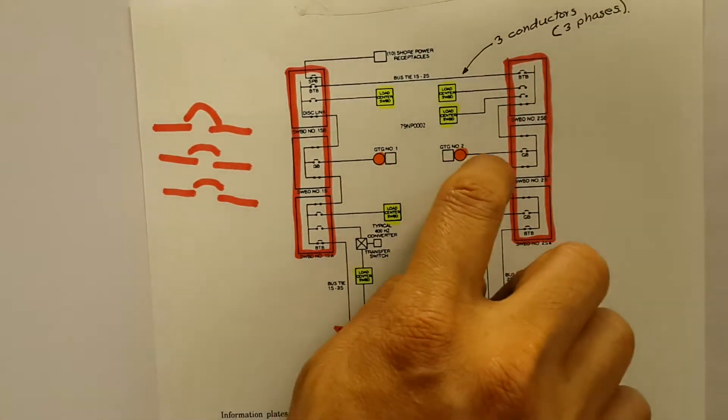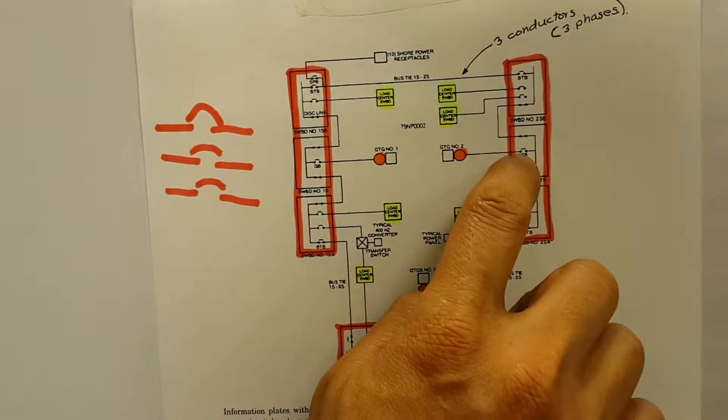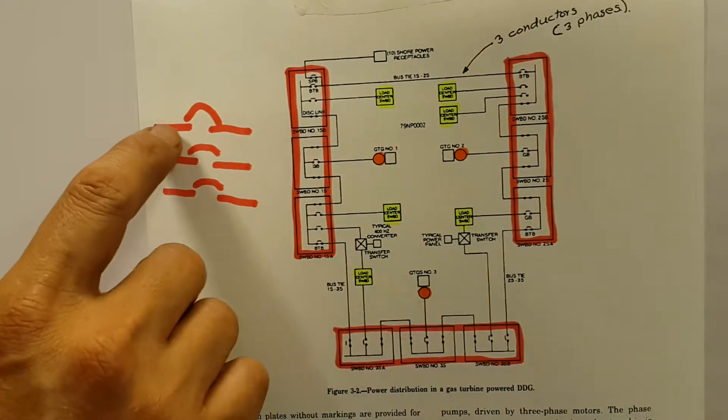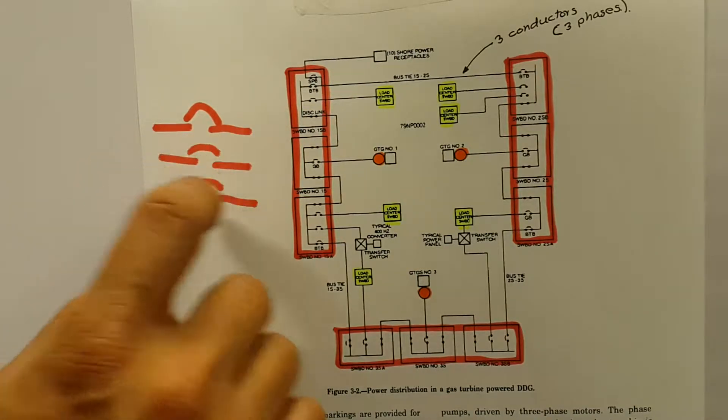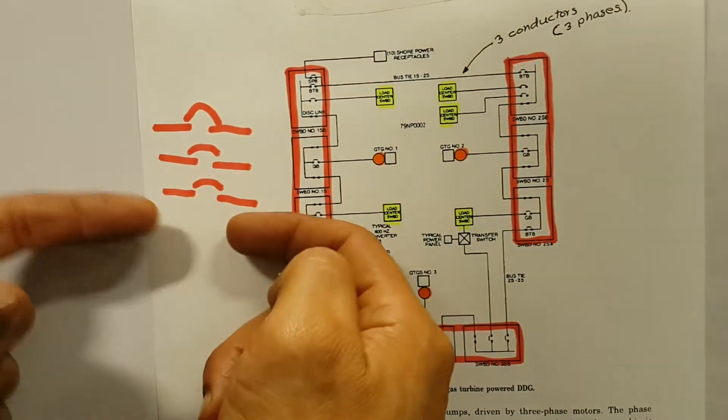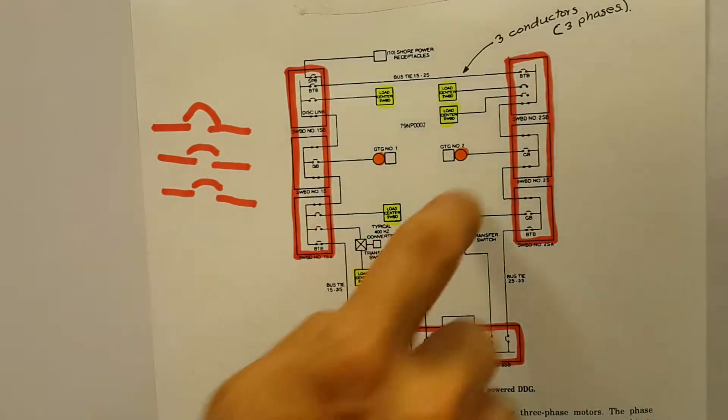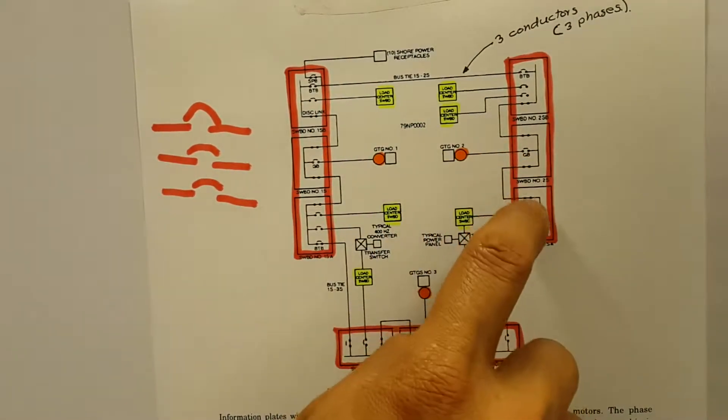Power from the generator enters the switchboard via the generator breaker. A breaker is just a big switch that allows us to connect three different wires at the same time when they close together. Three wires because we got three phases of power going into the switchboard.